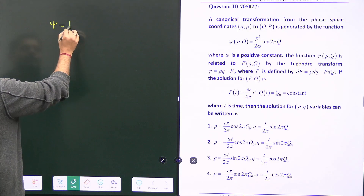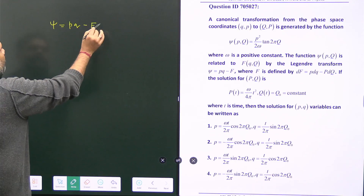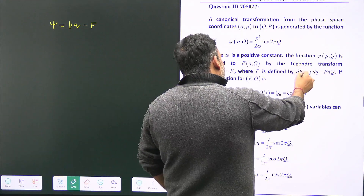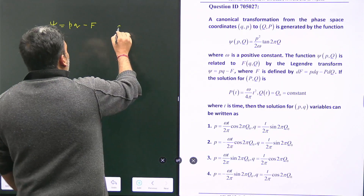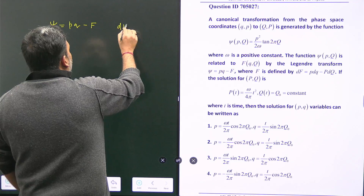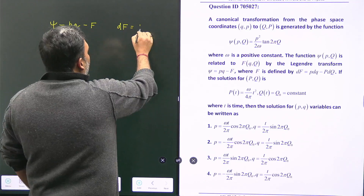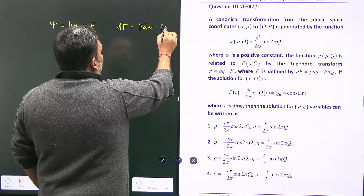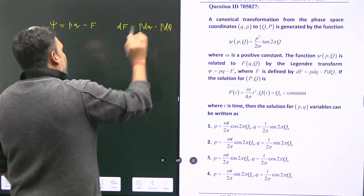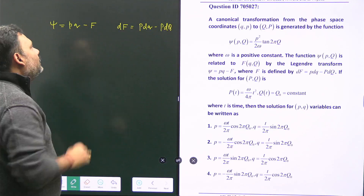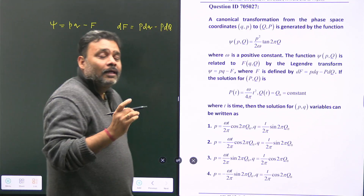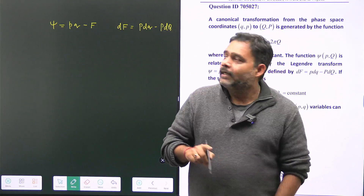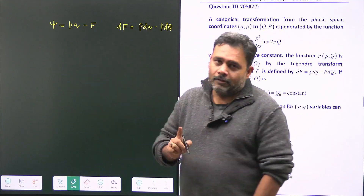It is given that ψ = pq − f, and df has the property: df = p dq − P dQ, where small p and capital P are the old and new momenta respectively. Let's see for which function ψ becomes a perfect differential.